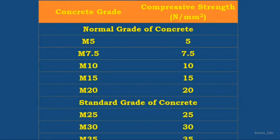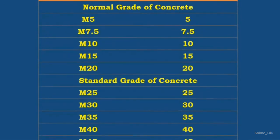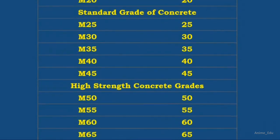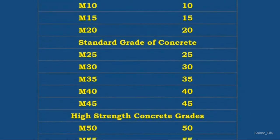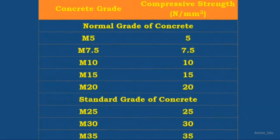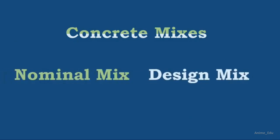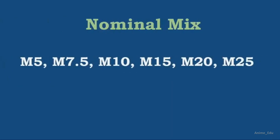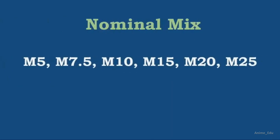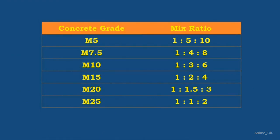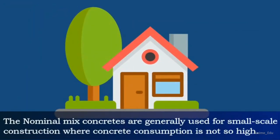As per Indian Standard code, there are three major groups of concrete: ordinary concrete, standard concrete, and high-strength concrete, with a total of 15 grades. There are two types of concrete mixes: nominal mix and design mix. Nominal mixes are those whose mix ratio is defined, which includes grades up to M25, and are generally used for small-scale construction where concrete consumption is not high.